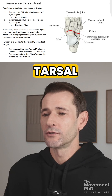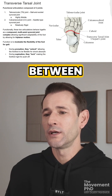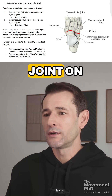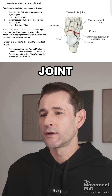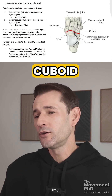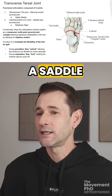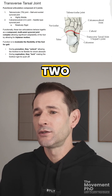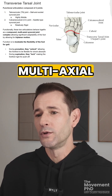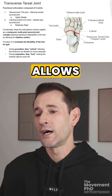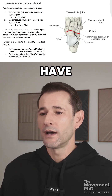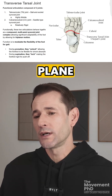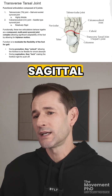Next up is our transverse tarsal joint. This is a functional articulation between our rear foot and our midfoot. It is composed of two different joints: the talonavicular joint on the medial aspect, which is a ball-and-socket synovial joint with a lot of mobility, and the calcaneocuboid joint on the lateral aspect, which is a saddle joint between the calcaneus and the cuboid. Functionally, these two articulations together behave as a compound multi-axial synovial joint that allows for triplanar motion — abduction and adduction in the transverse plane, inversion-eversion in the frontal plane, and dorsiflexion and plantarflexion in the sagittal plane.